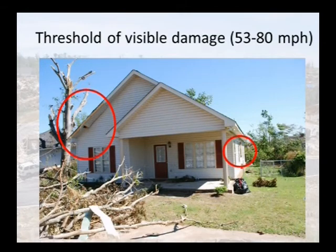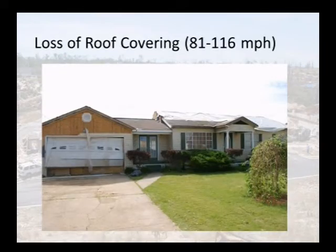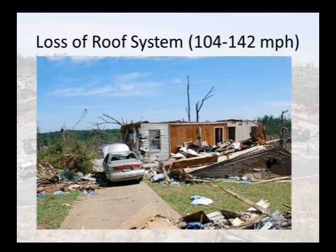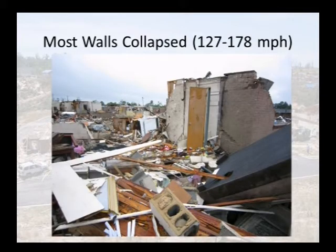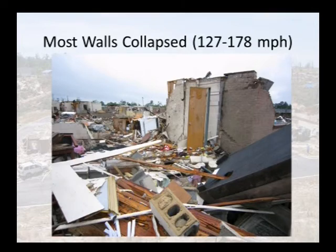Just to give you a recap of what we saw — from an EF scale rating standpoint — this is how we rated these photos. A threshold of visible damage begins between 53 and 80 miles per hour. Loss of roof covering occurs at 81 to 116. The loss of the roof system occurs at 104 to 142. Then loss of exterior walls at 113 to 153. Most walls collapsed at 127 to 178. This one — all walls collapsed — is the highest category and can range down even a little lower.